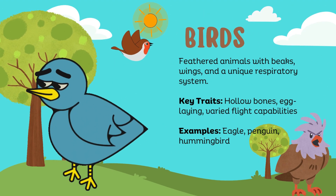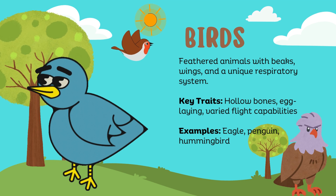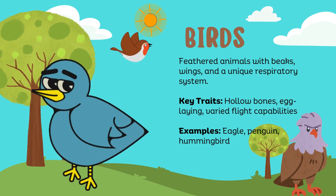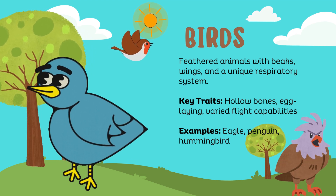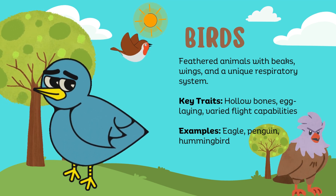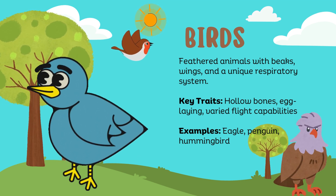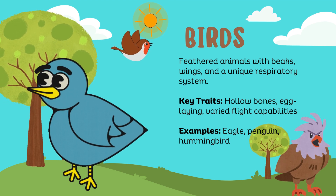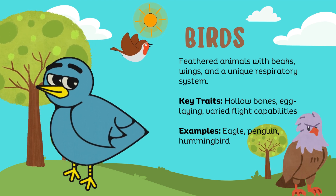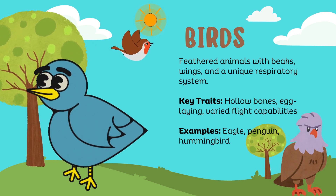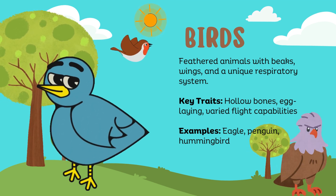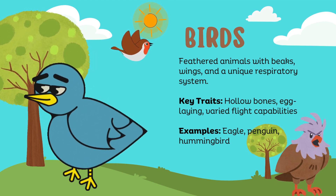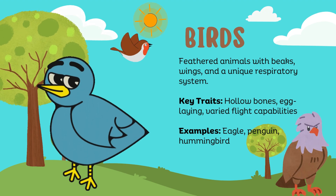Birds: feathered animals with beaks, wings, and a unique respiratory system. Key traits: hollow bones, egg-laying, varied flight capabilities. Examples: eagle, penguin, hummingbird.